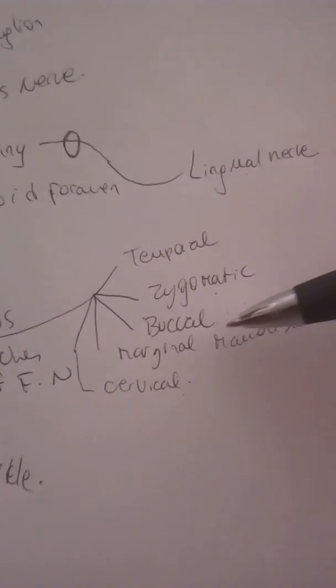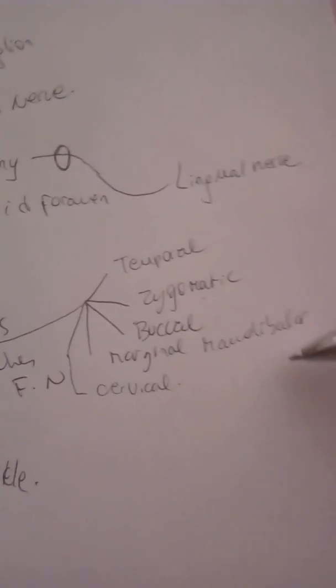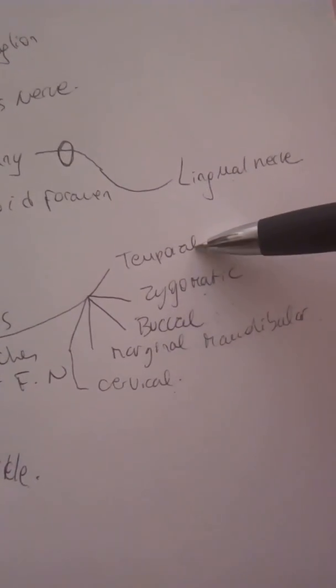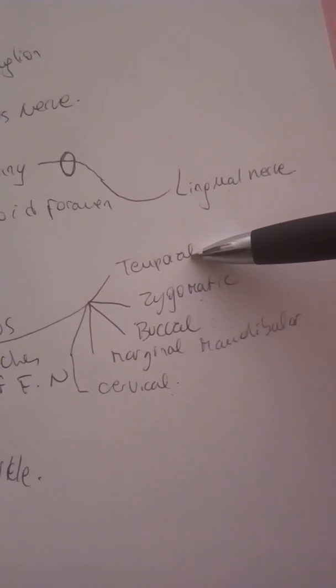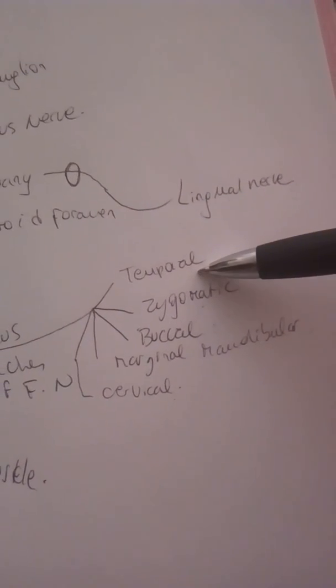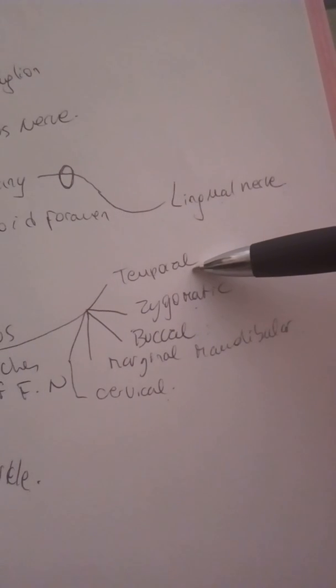We have temporal, zygomatic, buccal, marginal mandibular, and cervical. The temporal branches will supply the occipitofrontalis, orbicularis oculi, and corrugator supercilii.